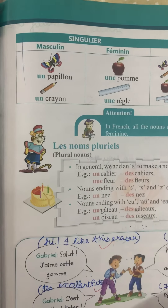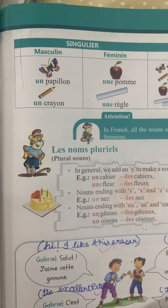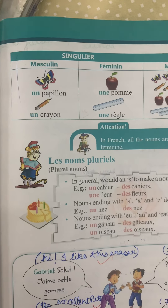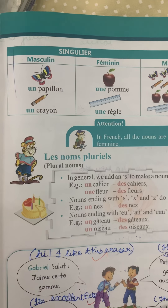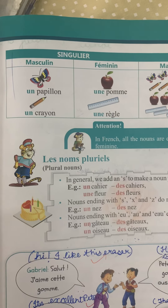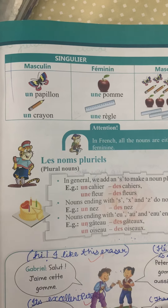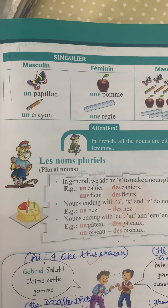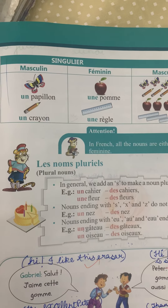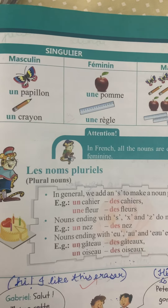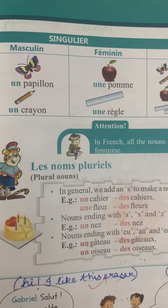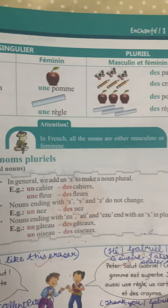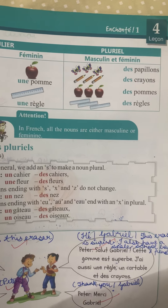Let us take examples of singular masculine and feminine. Un papillon is a butterfly — butterfly is masculine, so we use un with it. Un crayon is a pencil — masculine. Une pomme is an apple. Une règle is a scale.